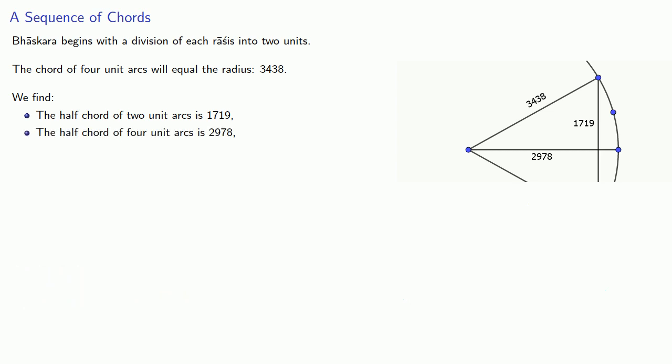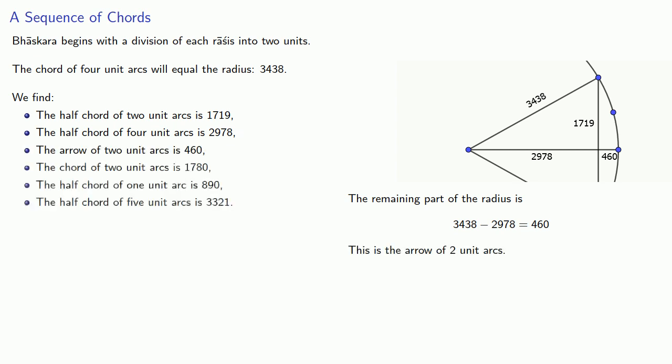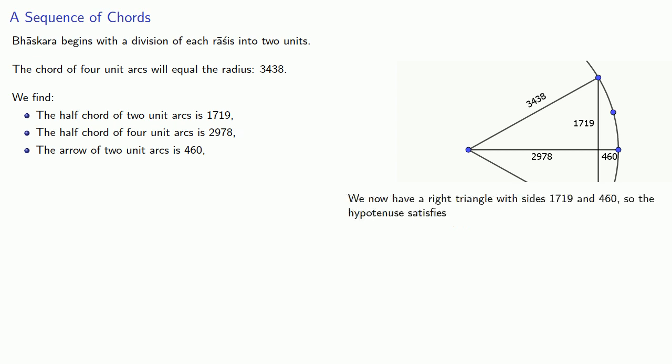But wait, there's more. The remaining part of the radius is the arrow of two-unit arcs. And we now have a right triangle with sides 1719 and 460, and so our hypotenuse can be found.